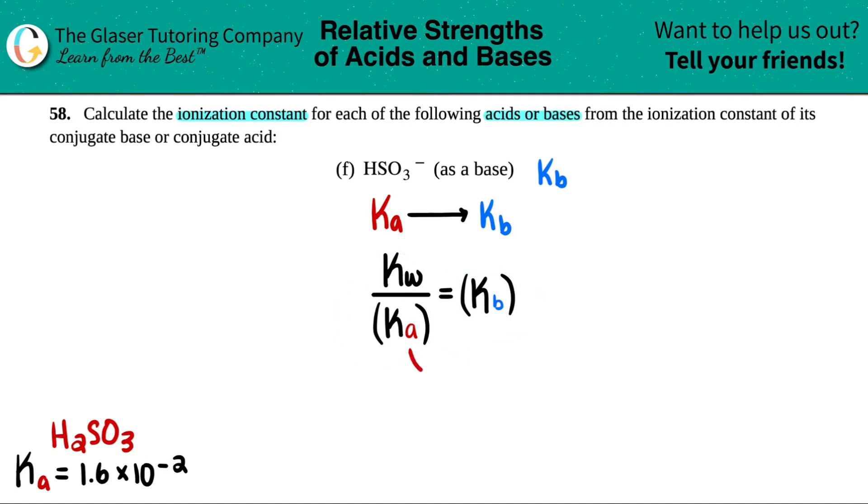The Ka is from the conjugate acid. That's from the back of the book, 1.6 times 10 to the negative two. And then the KW, since we're talking about standard values and room temp,